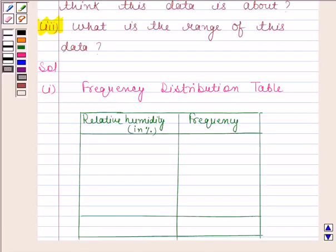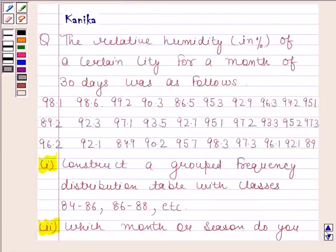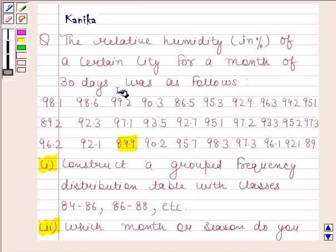We are given to take classes as 84 to 86, 86 to 88, etc. The minimum value here is 84.9. And maximum value here is 99.2.